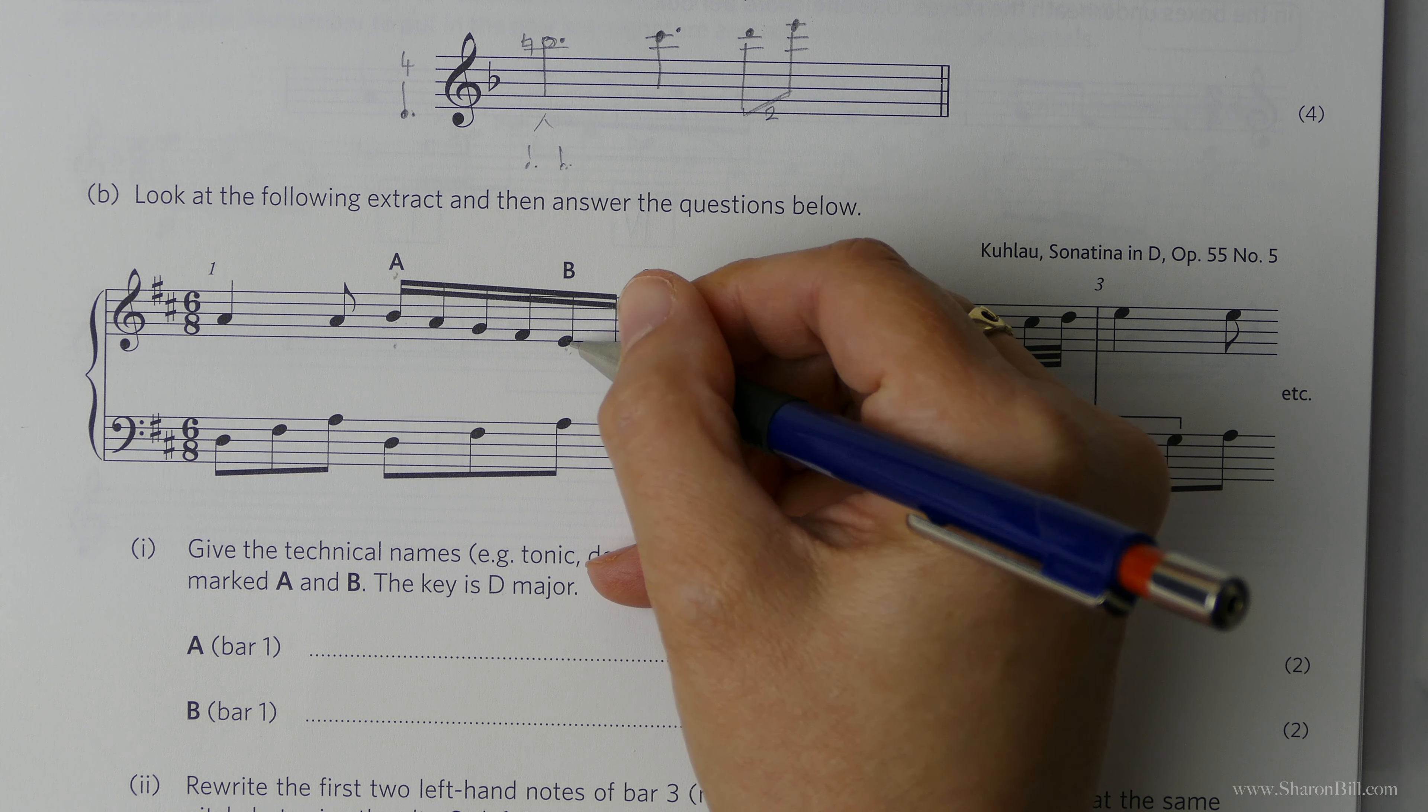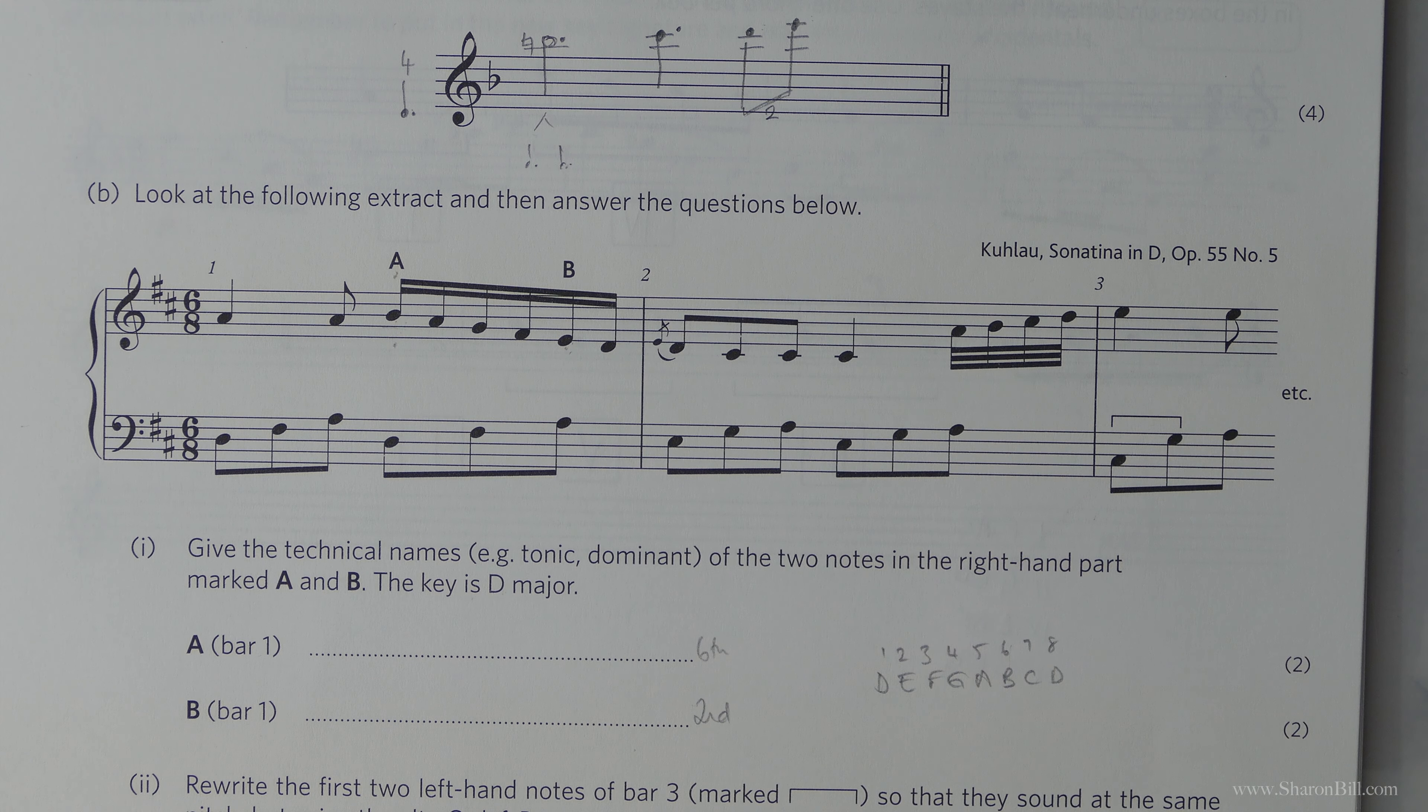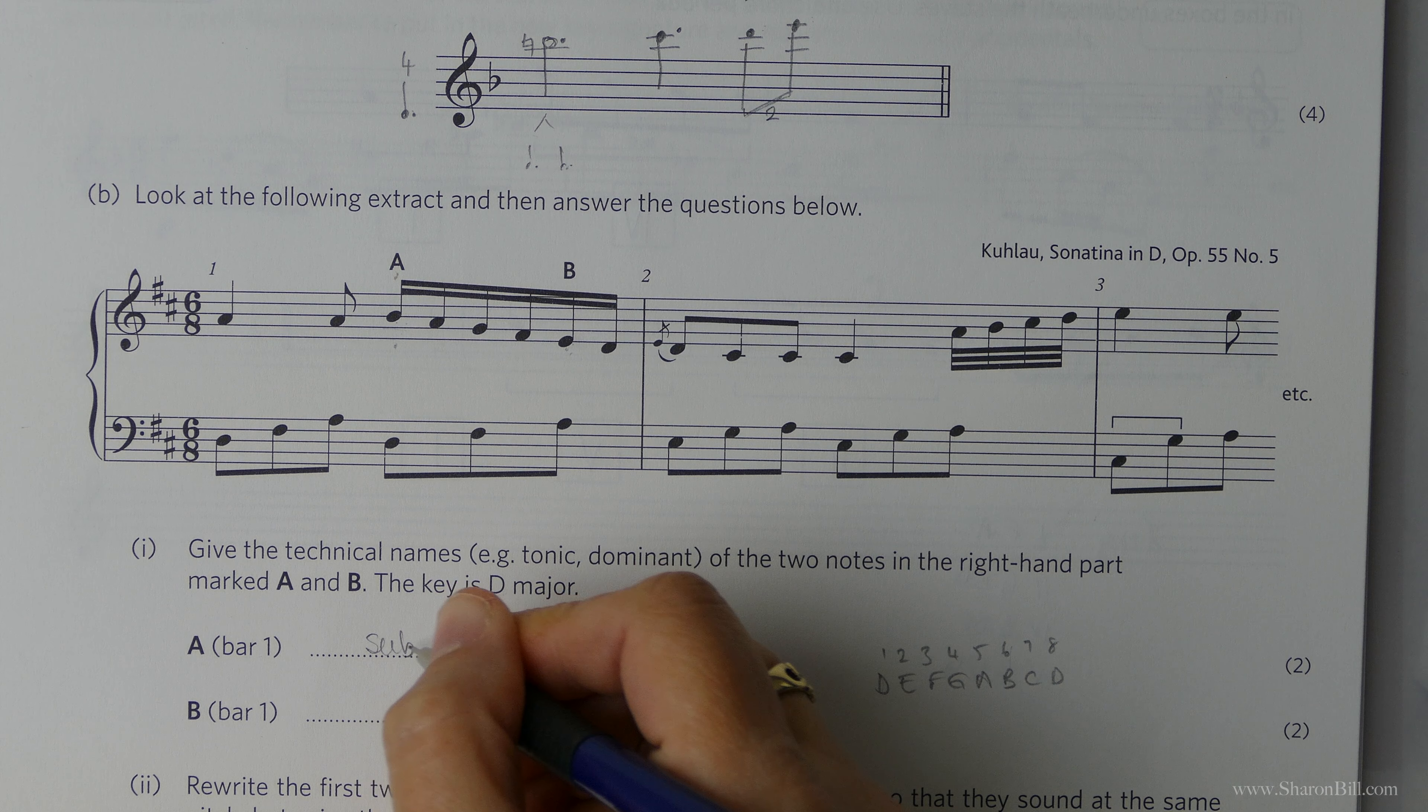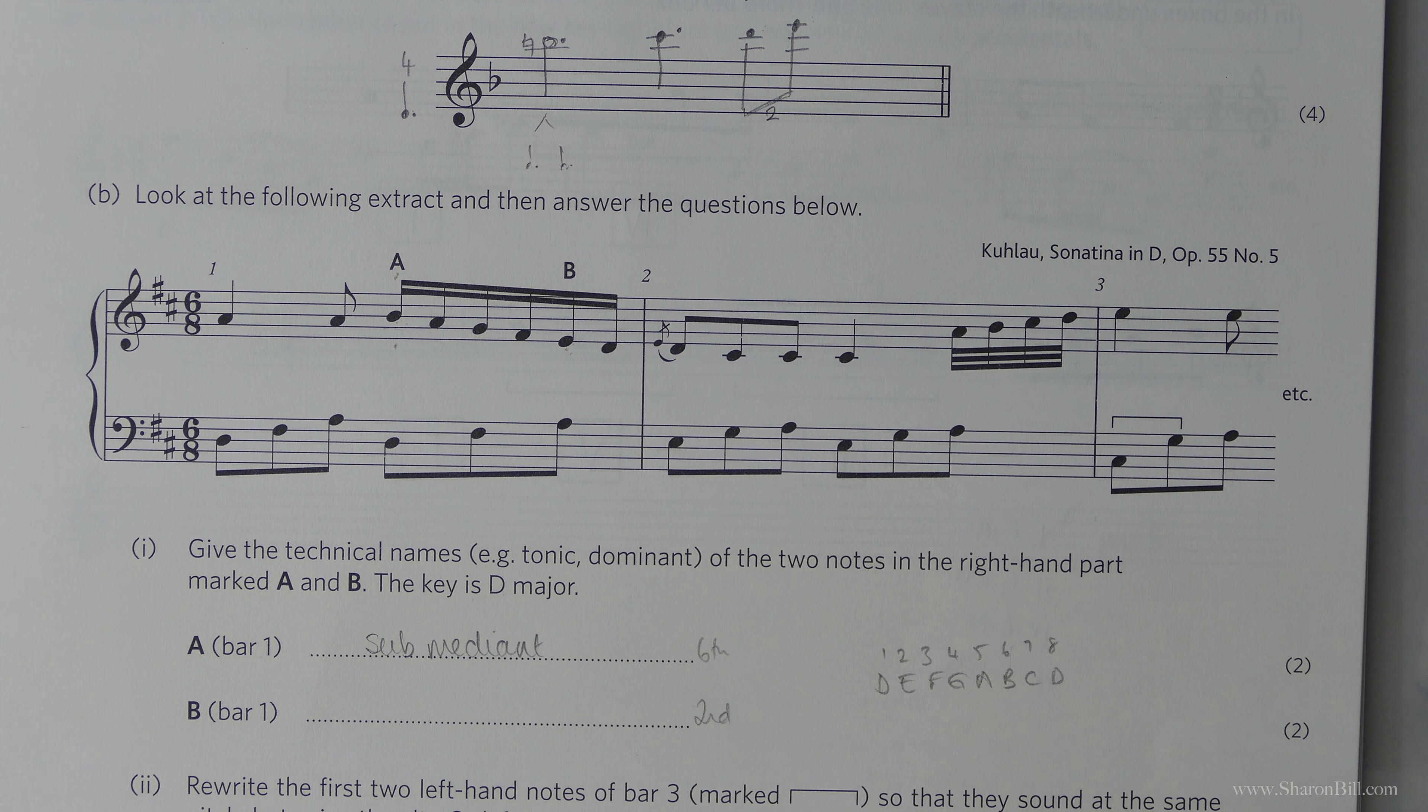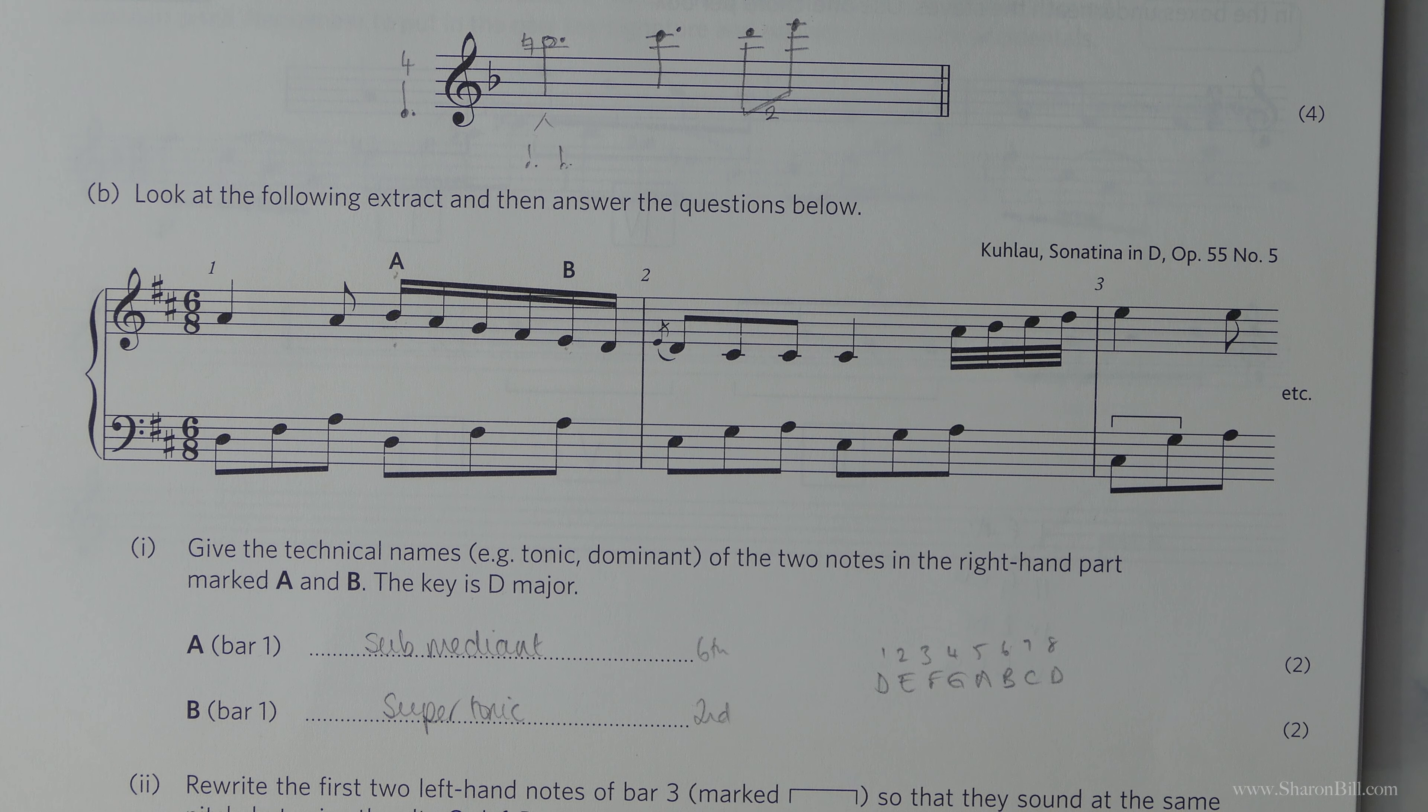And so D is 1, E is 2, so we can see that's the second. So then the technical names for the sixth is submediant. And the second is the super tonic above the tonic. There we go.